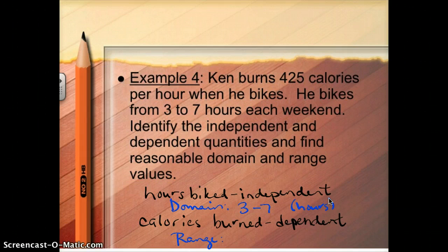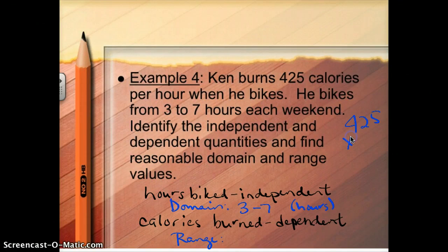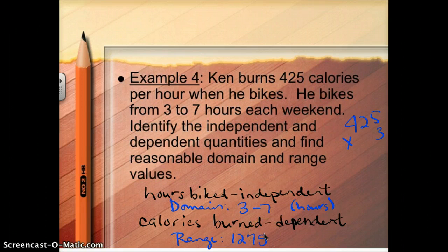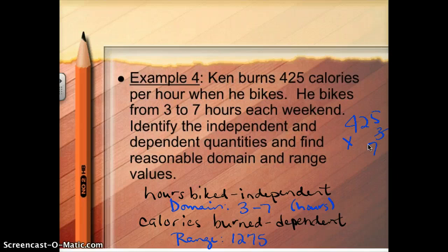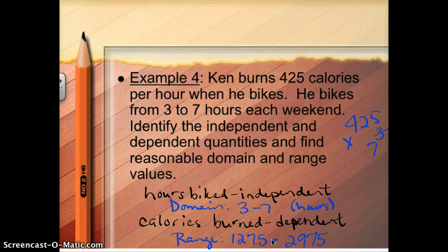For our range, we want all the possible values for calories burned. The smallest number of calories he could burn: he burns 425 calories per hour and bikes at least three hours, so 425 times three gives 1,275 — that's the smallest reasonable range value. The most he'd burn is 425 times seven hours: 425 times seven equals 2,975. So the reasonable range for calories is from 1,275 to 2,975.